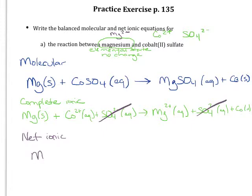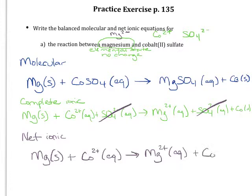So all we're going to have is the magnesium in its elemental state reacting with that cobalt to form magnesium ion and elemental cobalt. So that is my net ionic.